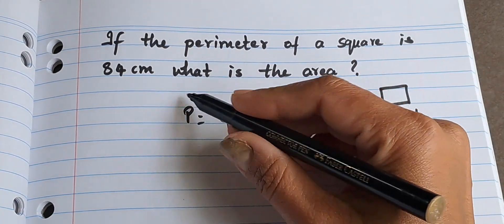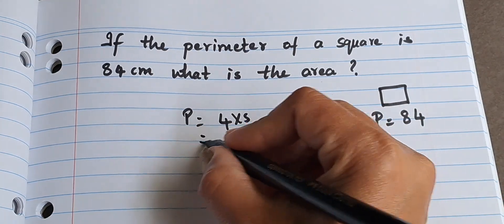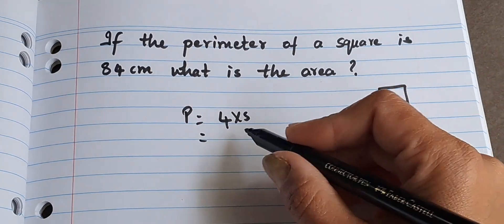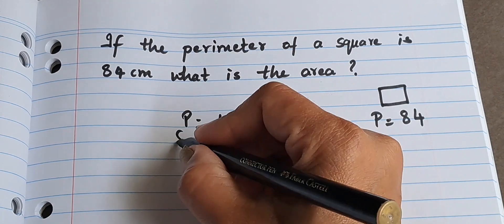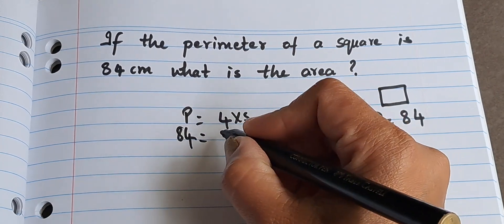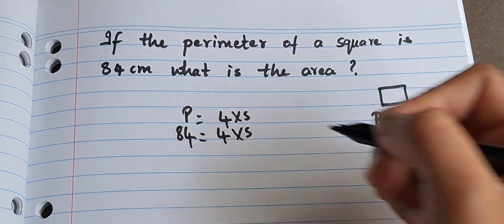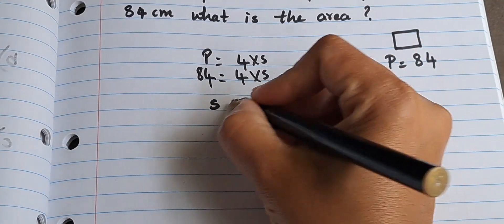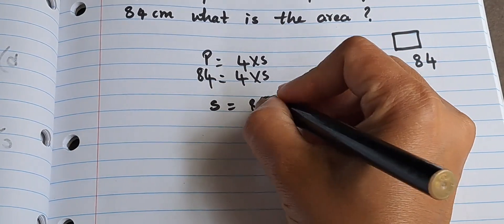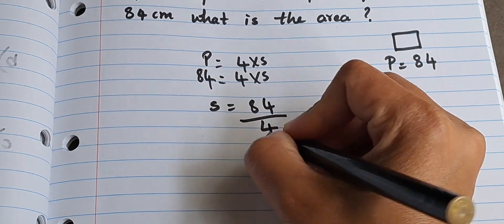So we have to find the side. Since the perimeter is given, 84 centimeters equals 4 times s. Now s will be 84 divided by 4. Why did we divide this by 4?